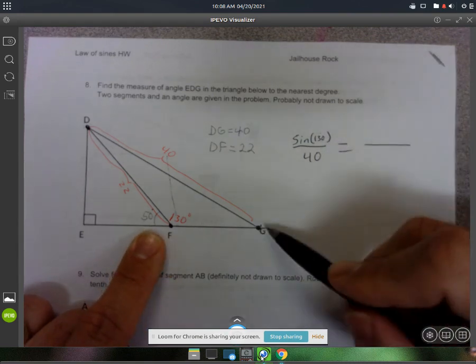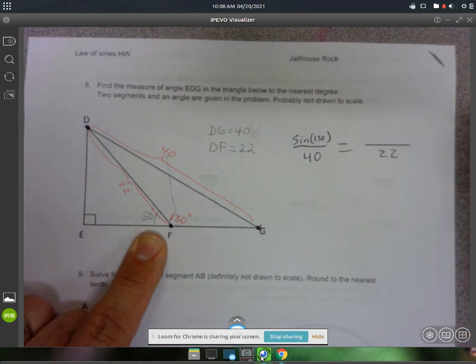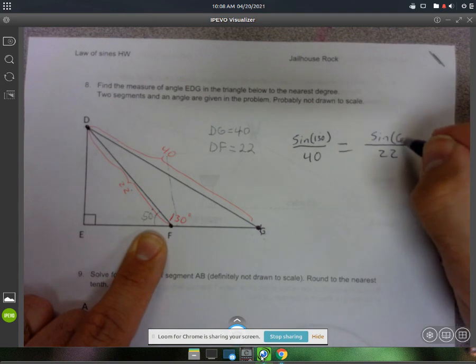And on the right side, G and 22 are across from each other. So I'm going to say 22 on the bottom and sine of, I'll just call it angle G right here.